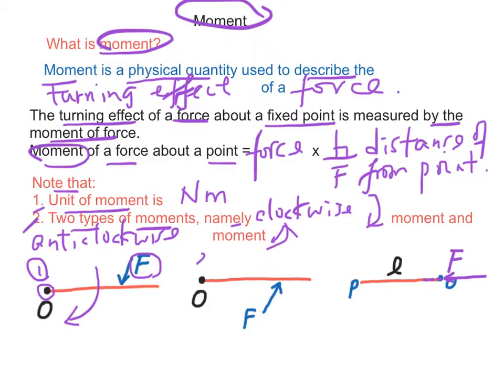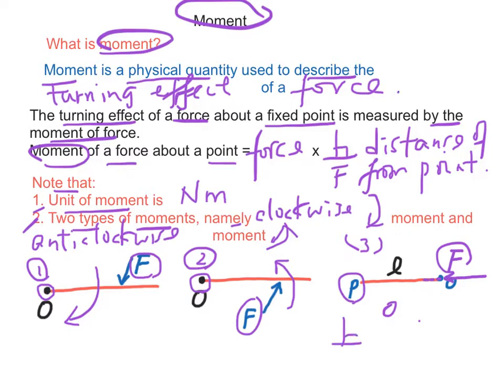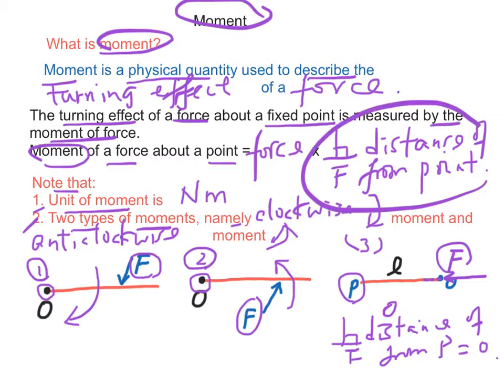For the second case, if the force acts on the rod in that direction, the moment of this force about point O is anticlockwise moment. For the last case, if the force acts on the rod in that direction, the moment of the force about the point P will become zero, because the perpendicular distance of the force about the point P is zero, therefore the moment becomes zero.